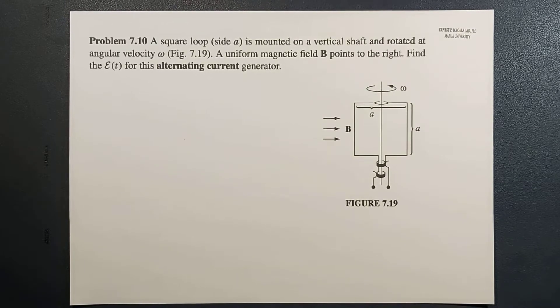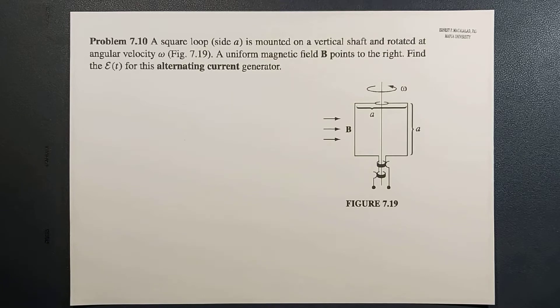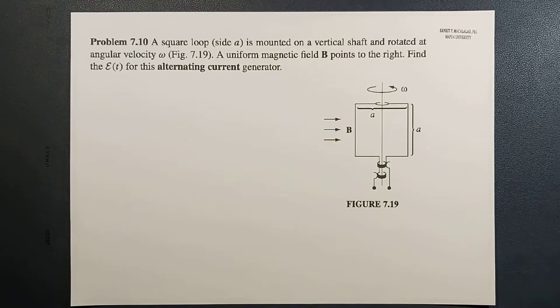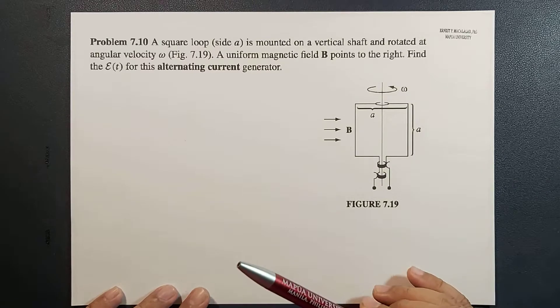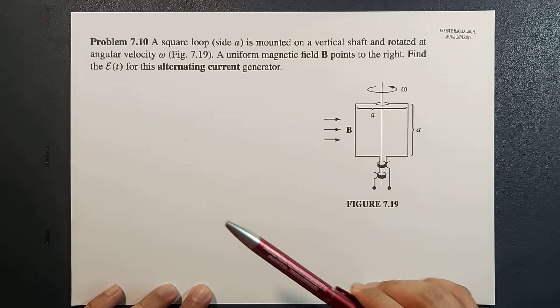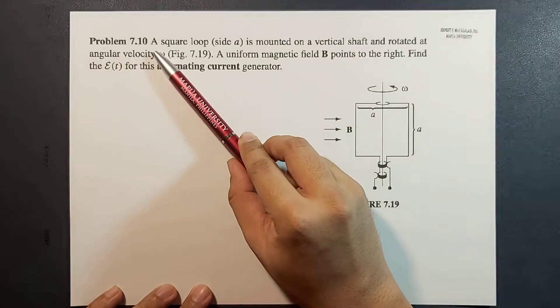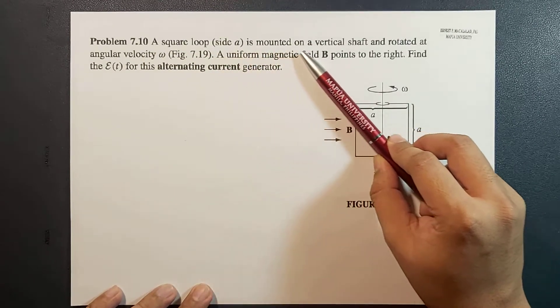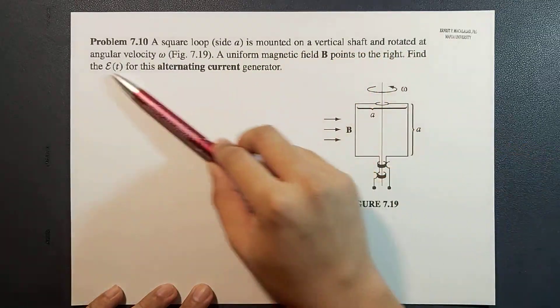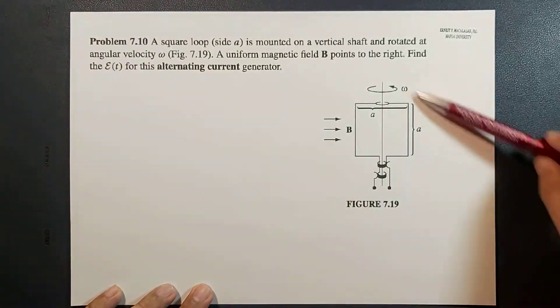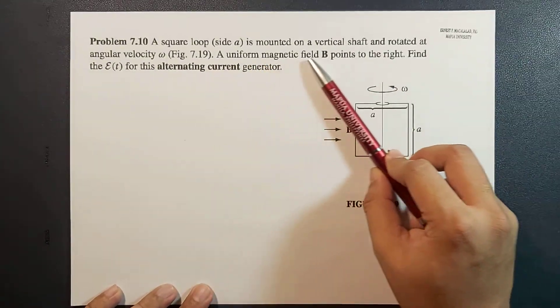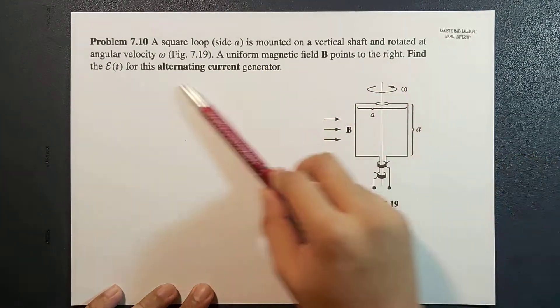What's up guys, it's me Sir Ernest, and today we're going to solve problem 7.10 of the fourth edition of David Griffith's Introduction to Electrodynamics. The problem reads: a square loop side a is mounted on a vertical shaft and rotated at an angular velocity omega. A uniform magnetic field points to the right. Find the EMF as a function of time for this alternating current generator.